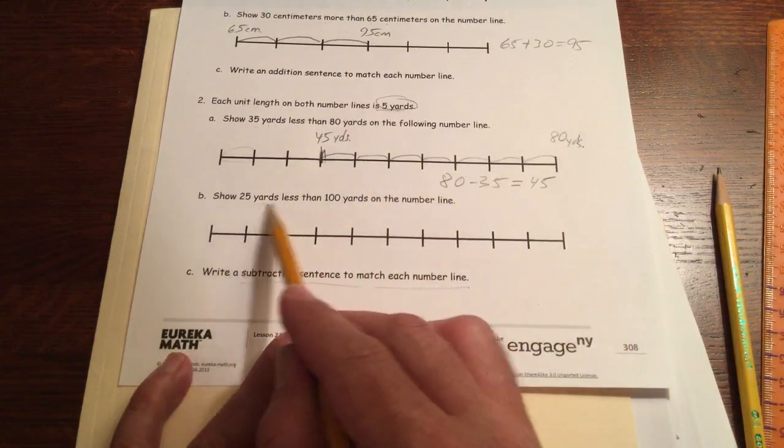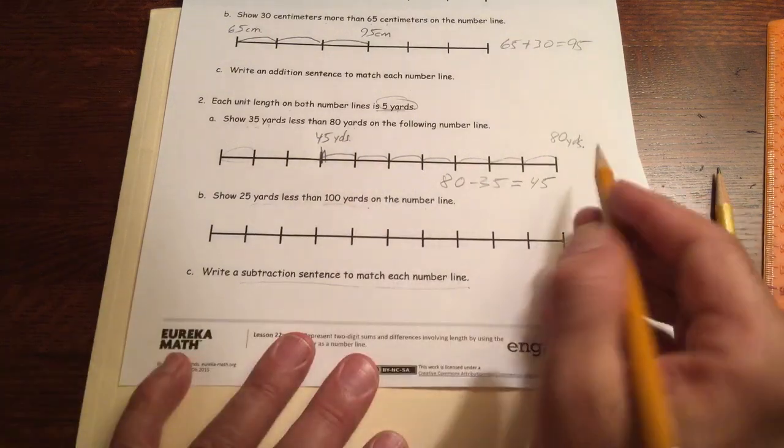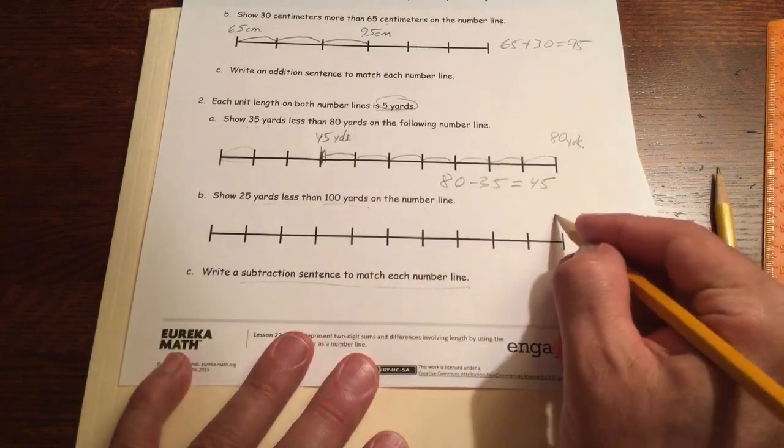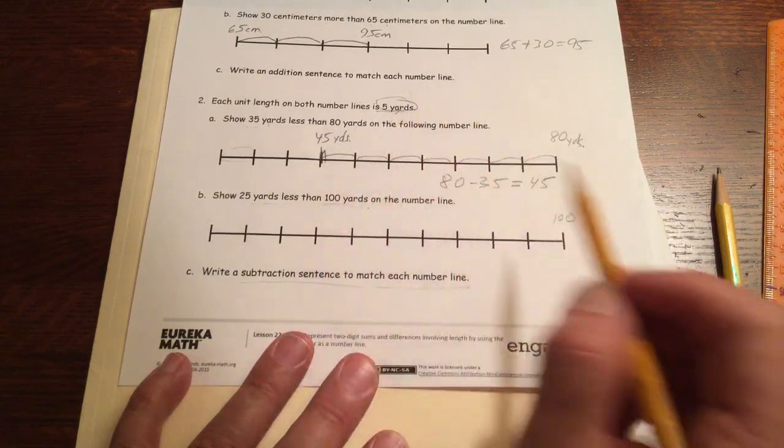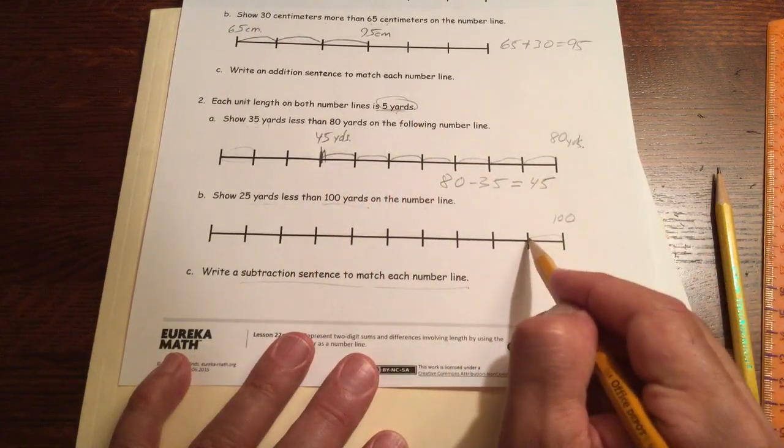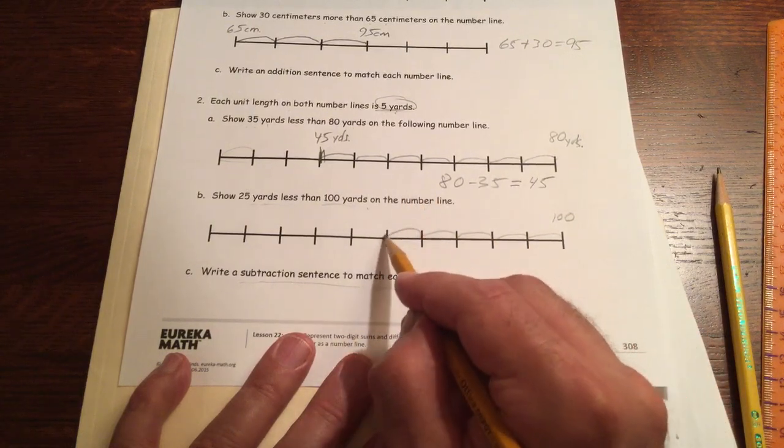Show 25 yards less than 100 on the number line. So we're going backwards from 100 now. And we're going to go back 25, counting by fives. 5, 10, 15, 20, 25.